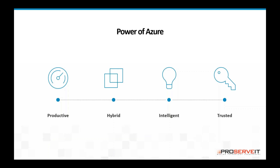Azure does support hybrid scenarios, so you're able to extend your on-prem data center to the cloud. There's no requirement to shift your entire infrastructure to Azure to take advantage of a lot of these benefits, including Windows Virtual Desktop. You can continue to run the bulk of your legacy infrastructure on-prem and just leverage Azure where it makes sense. There's also a ton of intelligence behind Azure — Microsoft has done a really good job of providing guidance, tips, and recommendations on how to improve your overall Azure experience and help keep costs under control through advisors and recommendations.